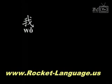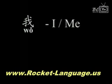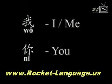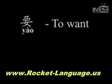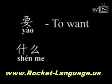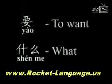我 — 我 means I and me. 你 — 你 means you. 要 — 要 means to want. 什么 — it means what.